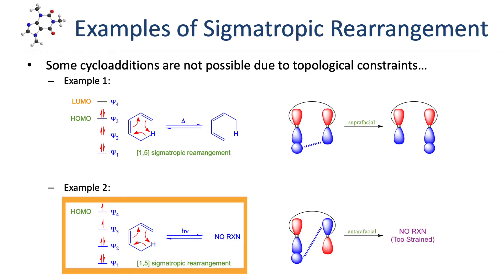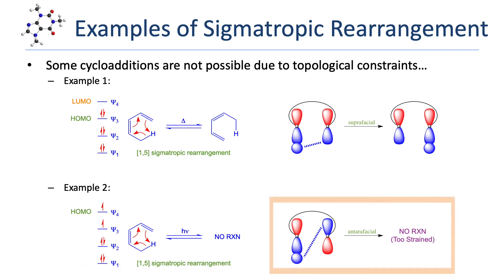In the second example, we see 1,3-pentadiene undergo a 1,5-sigmatropic rearrangement under photochemical conditions. Under photochemical conditions, the molecule will be in its most stable excited state. An electron has been excited from psi-3 to psi-4, making psi-4 the HOMO — an even-numbered pi molecular orbital, which is asymmetric. We can see that the reaction must now occur with an antarafacial topology. However, a six-atom cyclic transition state is too constrained to accommodate an antarafacial topology, so the reaction fails.